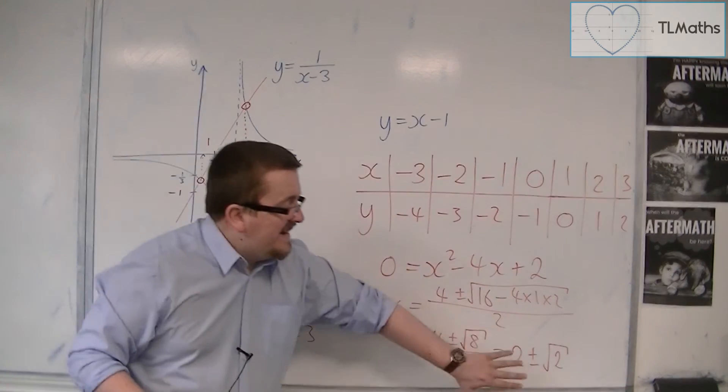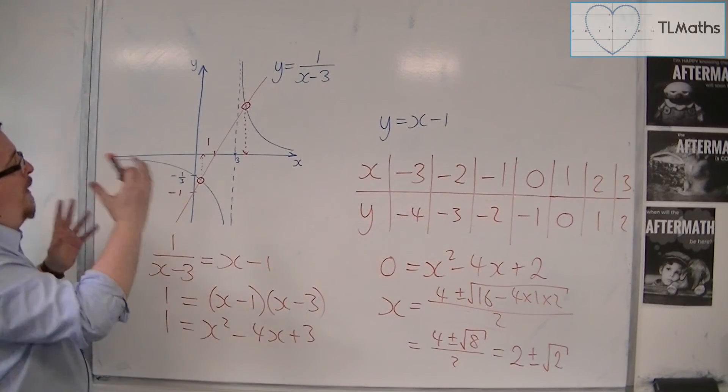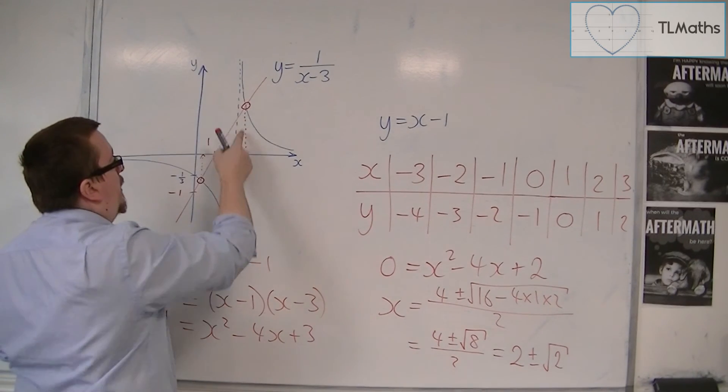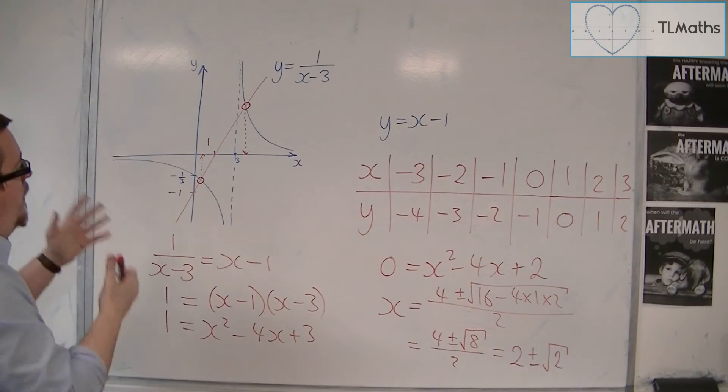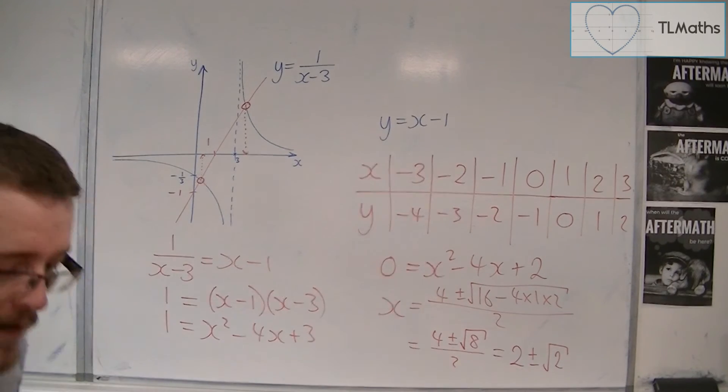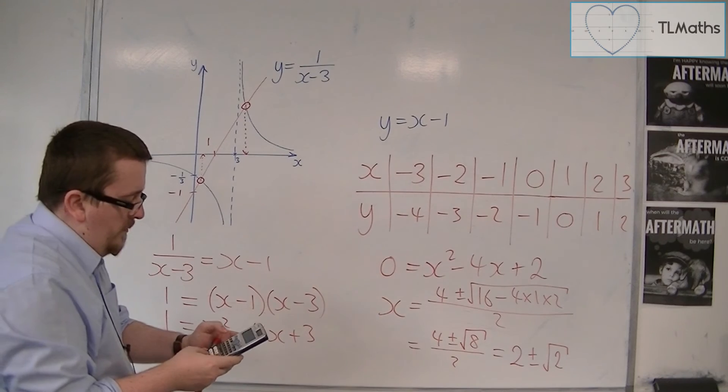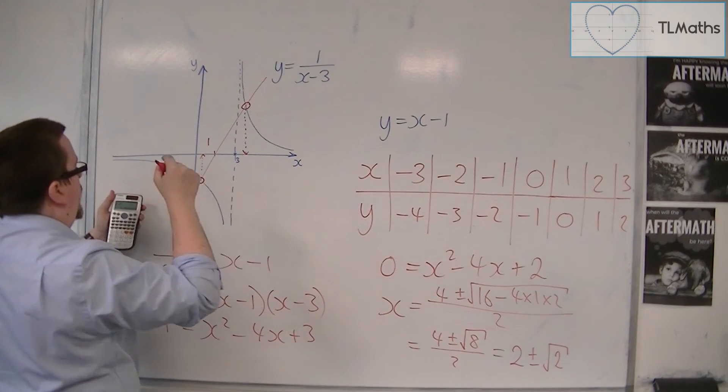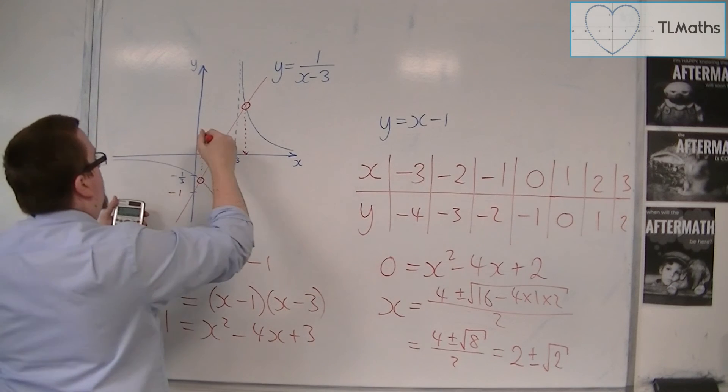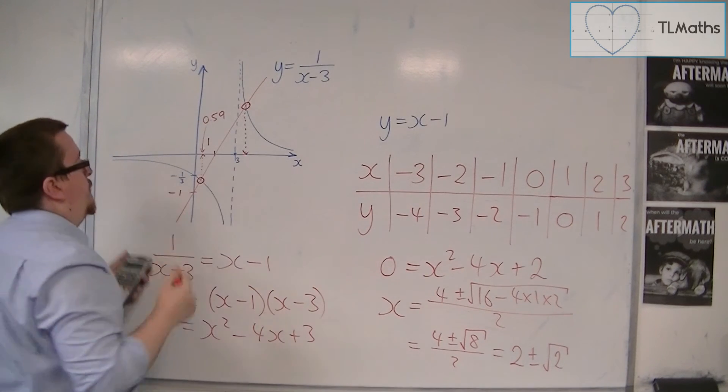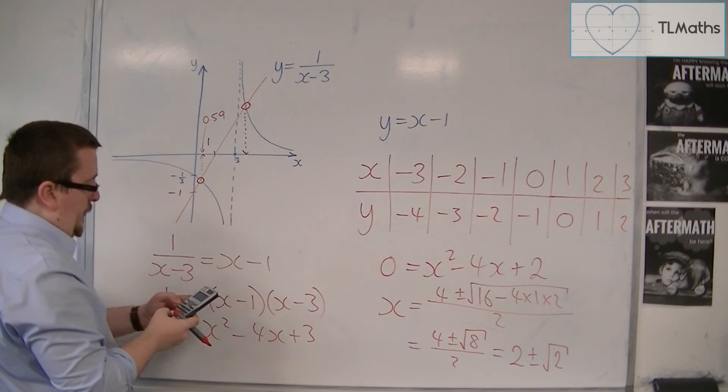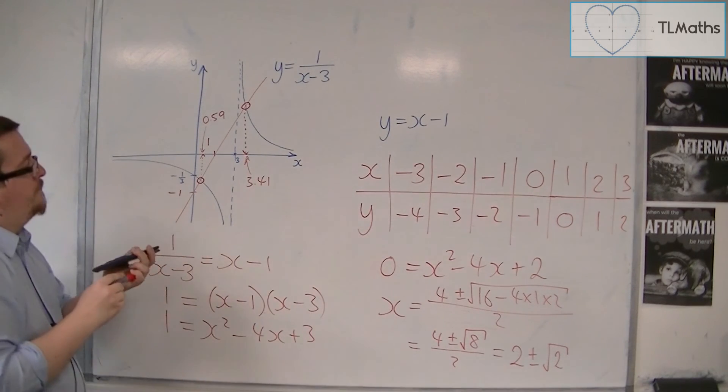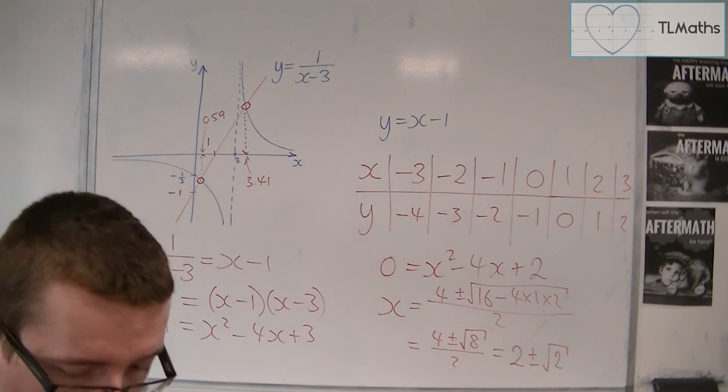Now obviously they are the exact values of where this curve intersects the line. So this would be 2 minus root 2, and that would be 2 plus root 2. So if I then use the calculator to get the decimal version, then this would be 0.5857864376. So 0.59 to 2 decimal places. And this solution is 2 plus root 2, which is 3.41 to 2 decimal places.